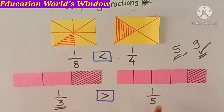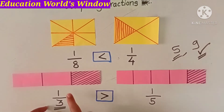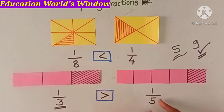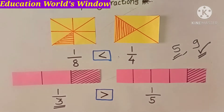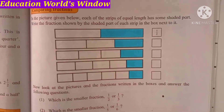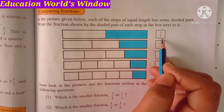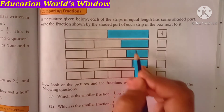When the denominator is the same, then the fraction value is the same. Now we look at textbook page 57 and compare the fractions. The first colored part fraction is 1 upon 2.